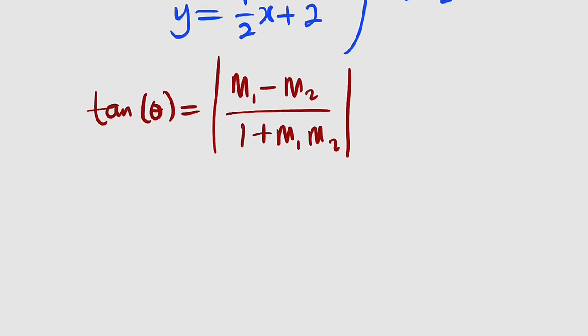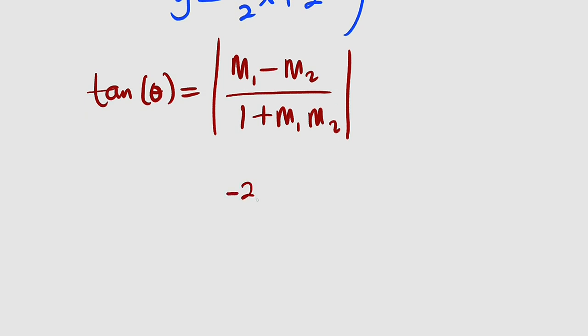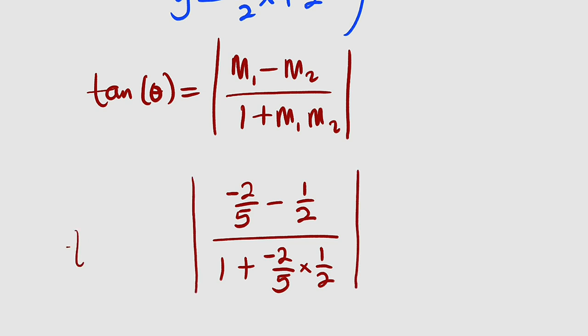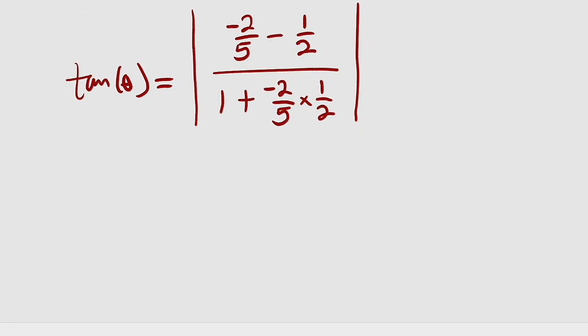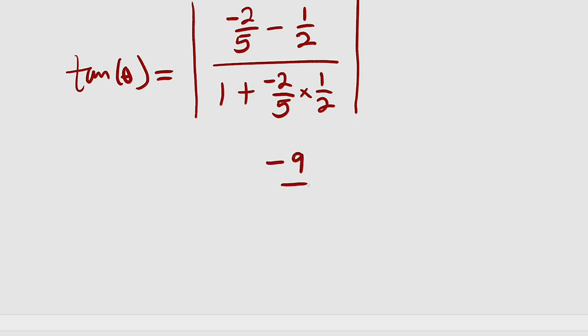m1 is negative 2 divided by 5. So let me write it. Negative 2 divided by 5 minus 1 divided by 2. Don't forget the absolute value because we don't want negative result. This is tangent of the angle we are looking for. So let's simplify. Negative 2 divided by 5 minus 1 over 2 will give us negative 9 divided by 10.